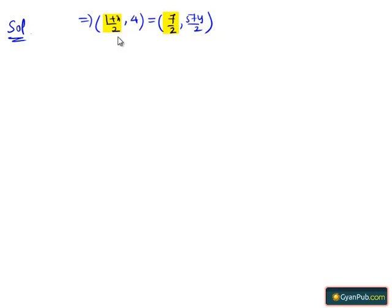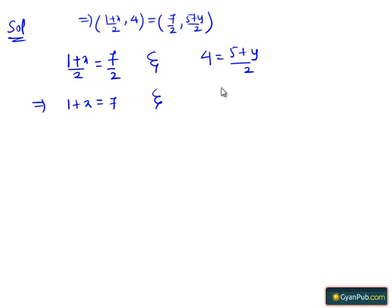(1 + x)/2 = 7/2. And now equating the y terms, we get 4 = (5 + y)/2. This implies multiplying by 2 on both sides, we get 2 times 4 is 8 equals 5 + y.